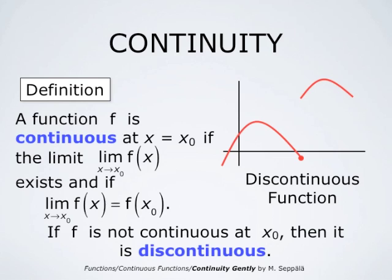If f is not continuous at x₀, then it is discontinuous. This picture shows a function that has left and right-hand limits at the point where its values jump, but these two limits are different. So this function does not have a limit at that point and is therefore discontinuous.